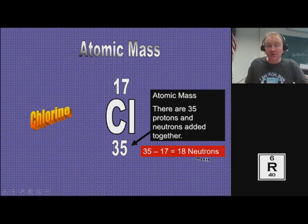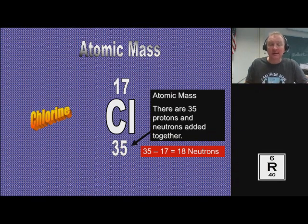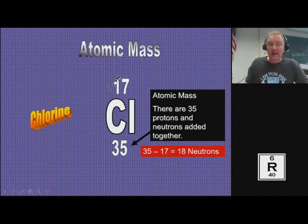It's important to note that the number of neutrons does not necessarily match the number of protons. In the last lesson, lesson 4.1, we talked about how protons and electrons always match in atoms. Atoms always have the same amount of protons and electrons because they don't have a charge. If there were an imbalance of protons and electrons, it would have a charge and be called an ion, not an atom. So elements and atoms do not have charges. The neutrons do not have to match the protons and electrons.